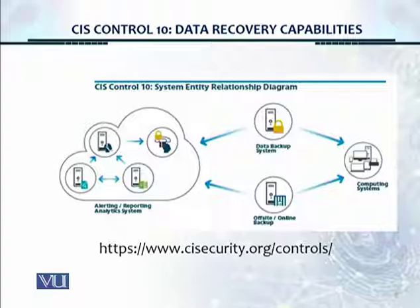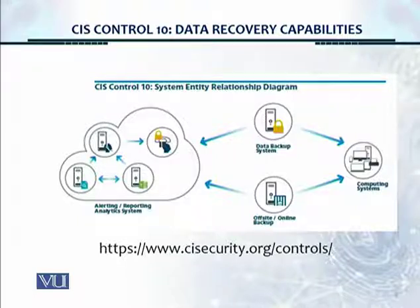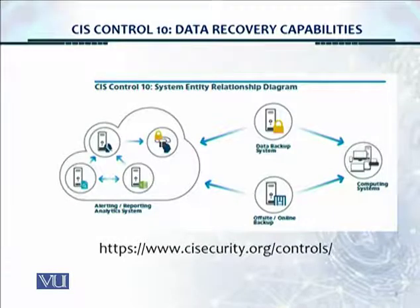This is the Entity Relationship Diagram. On the left, you have the Alerting Reporting Analytics System. On the right, you have your Computing Systems. And here we're going to utilize Data Backup Systems or Offsite and Online Backups.